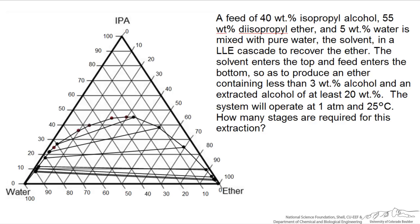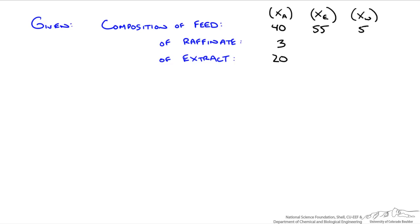So let's write down what we know, what we're looking for, and a picture of our system. We're given three compositions but no flow rates, so we're going to designate our compositions in mass fractions. xA is for our alcohol, xE for our ether, and xW for our water. For our raffinate and extract phase leaving, we're assuming that in each stage we reach equilibrium, so these values will be on our equilibrium curve.